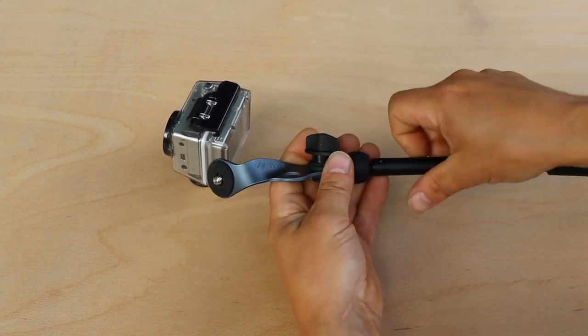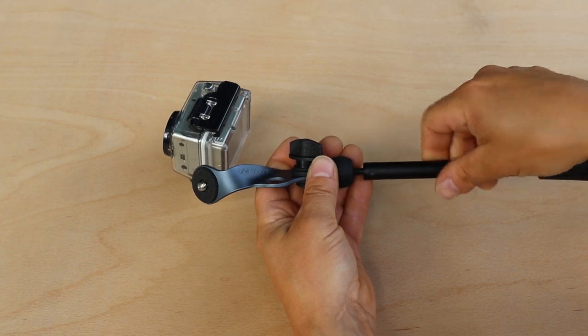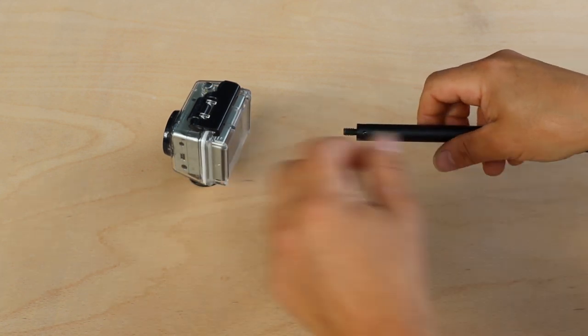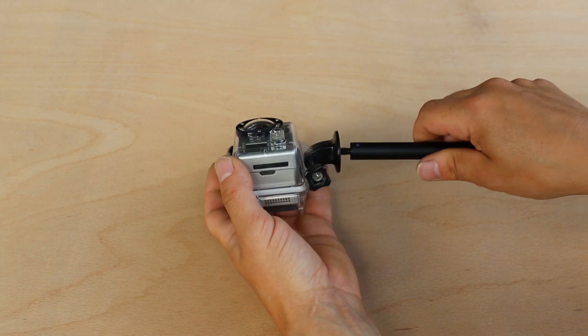You can also remove the entire head unit and use the pole as a monopod attaching your camera to the thread on the pole, but we do suggest taking care that you don't use too big a camera to avoid it becoming top heavy.